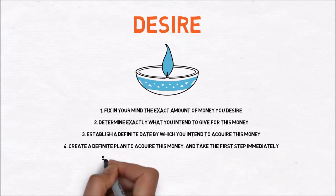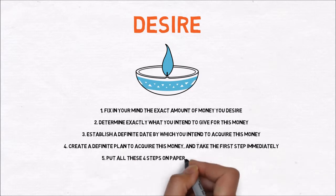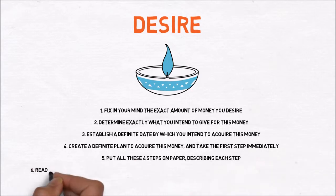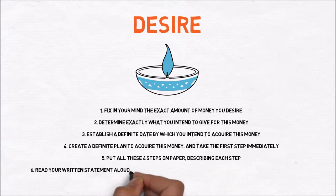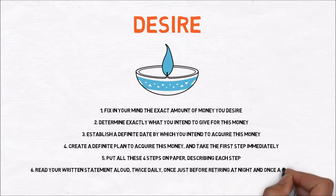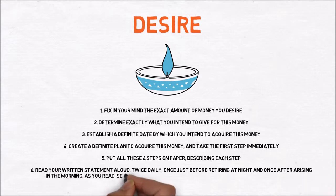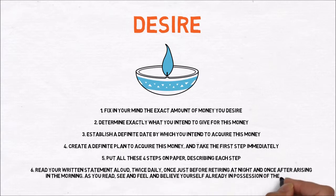Fourth, create a plan to acquire this money and take the first step immediately. Fifth, put all these four steps on paper describing each step. Sixth, read your written statement aloud, twice daily, once just before retiring at night and once after arising in the morning. As you read, see and feel and believe yourself already in possession of the money.